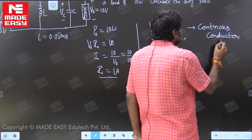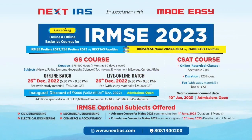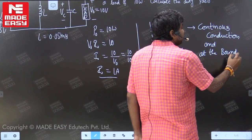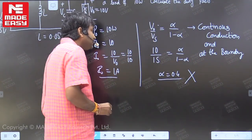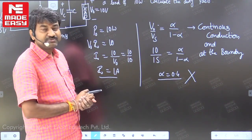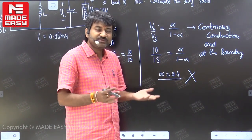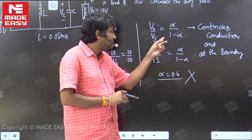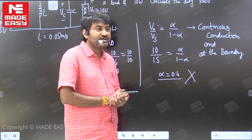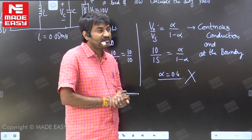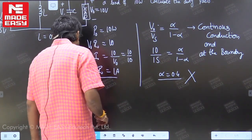This formula is also applicable at the boundary — at the edge of continuous conduction. But in the given question, they did not specify whether it is continuous conduction or whether it is at the boundary. That is not specified in the question. So how can you conclude that you can use this formula? You cannot say alpha equal to 0.4. First we have to cross-examine whether it is continuous or discontinuous.